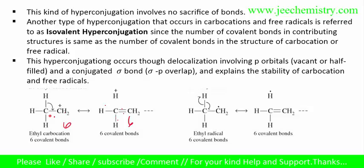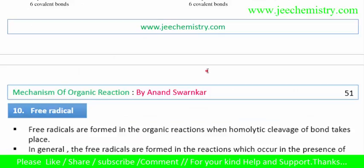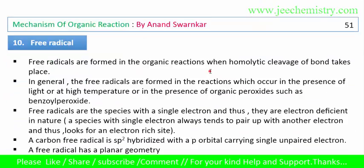For the free radical compound, it also has six covalent bonds in the original structure and six covalent bonds in the contributing structures. The covalent bonds are the same, so this is isovalent hyperconjugation. This kind of hyperconjugation involves no sacrifice of bonds — this is isovalent hyperconjugation. Now we will learn about free radicals.